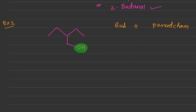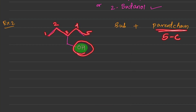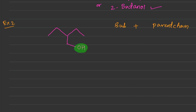A common mistake is to count one, two, three, four, five carbon atoms, think that's the longest chain, and call the parent chain five carbons. But this is wrong because that five-carbon chain does not have the OH group connected to it — it is one carbon atom away, not part of the chain. Instead, you start from the carbon directly connected to OH, and counting either direction gives four carbon atoms.